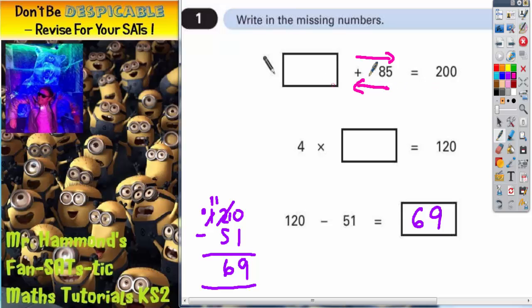But when we're going backwards and working in reverse, we've got to do the opposite of this, the inverse operation. So the opposite of add 85 is take away 85. If we do 200 take away 85, we'll get the answer.